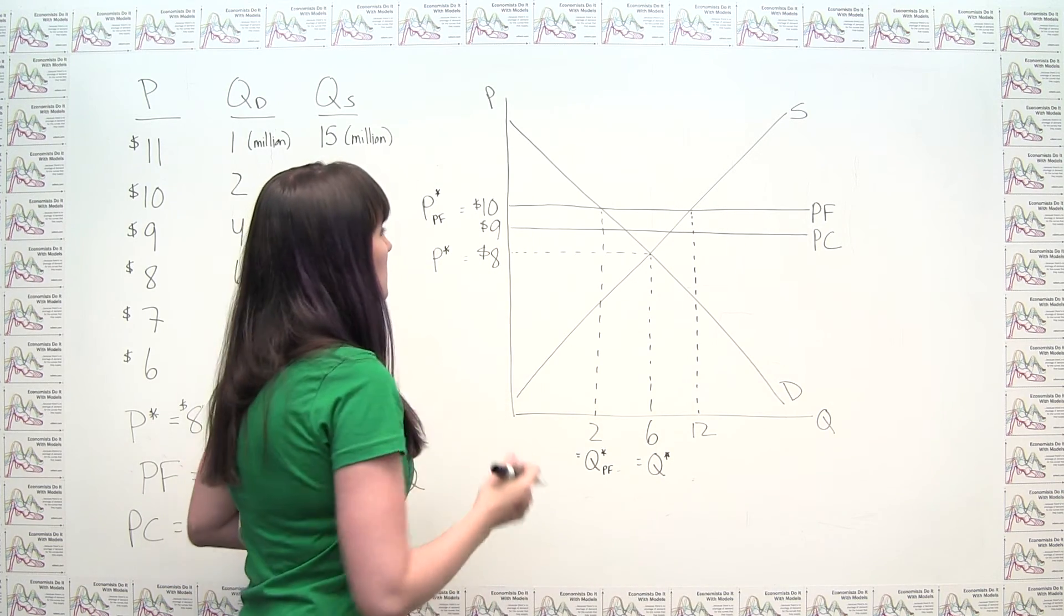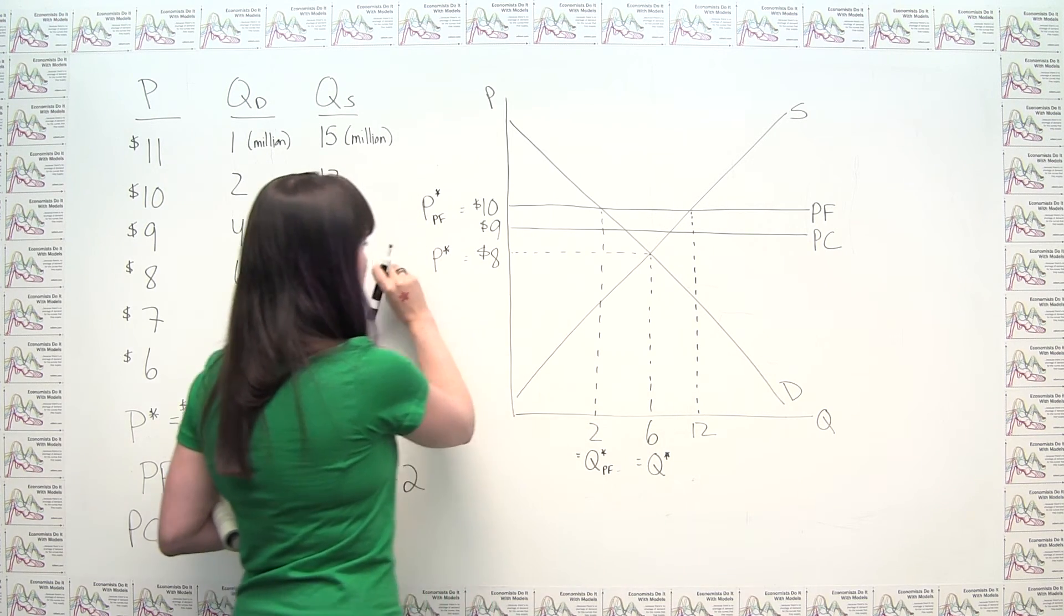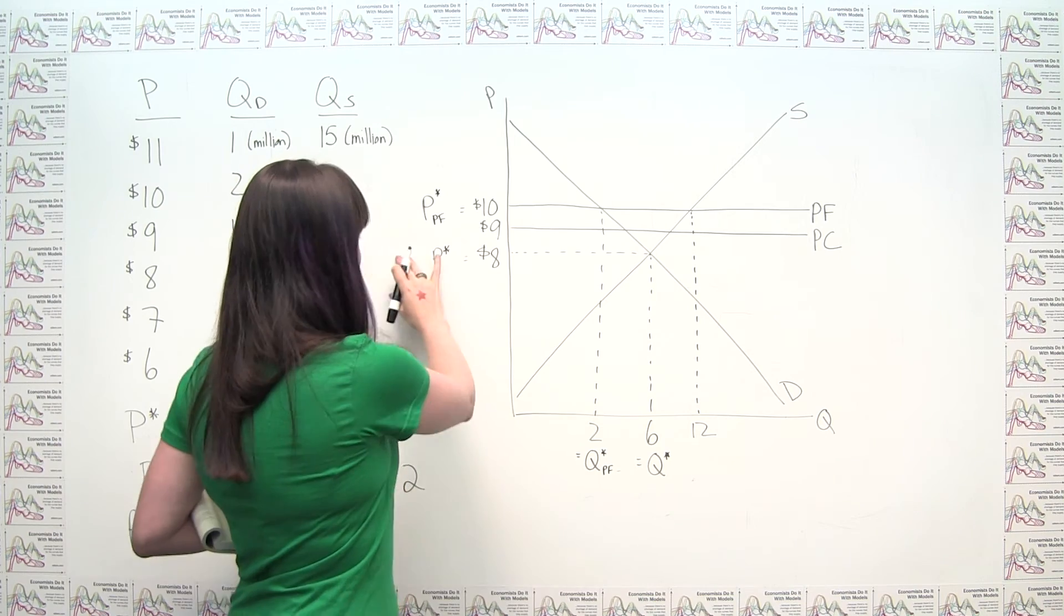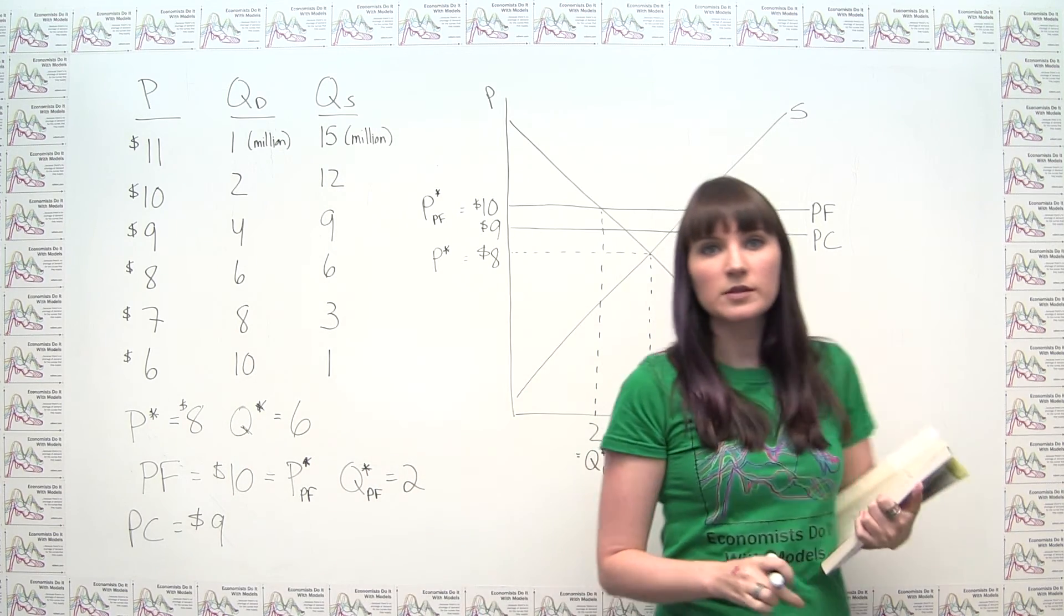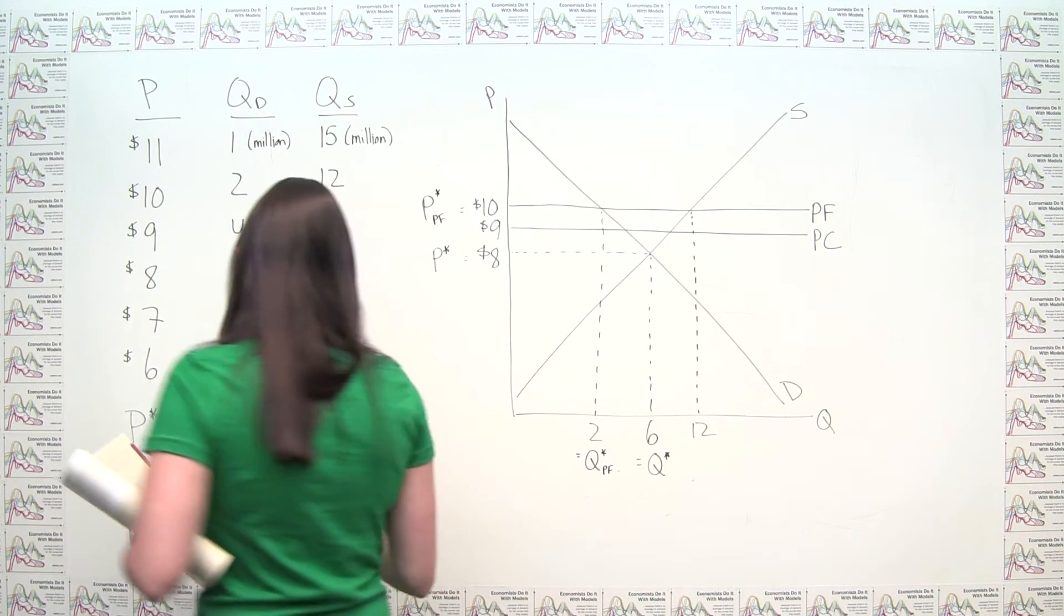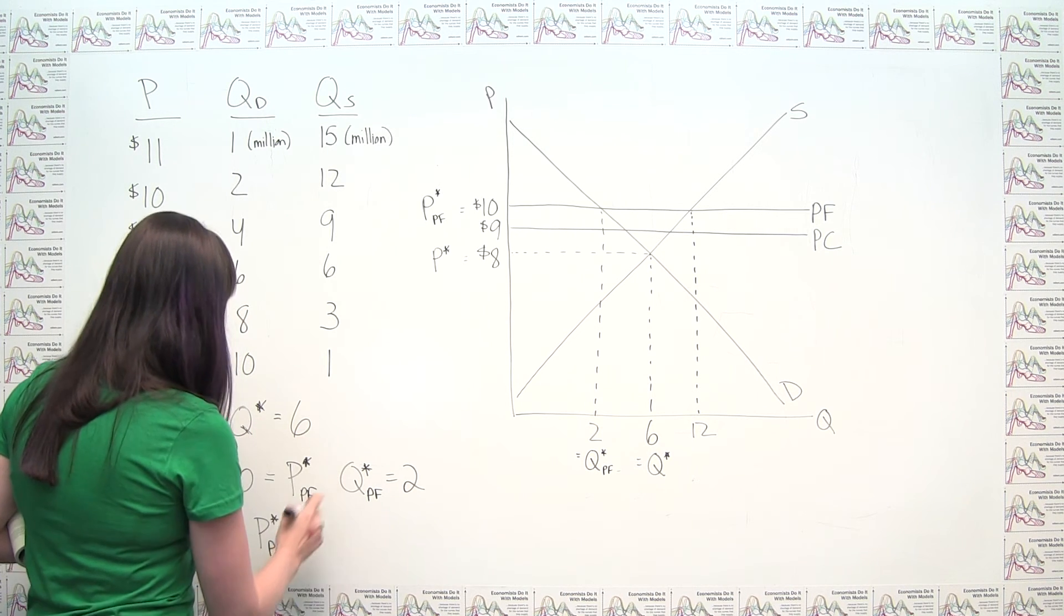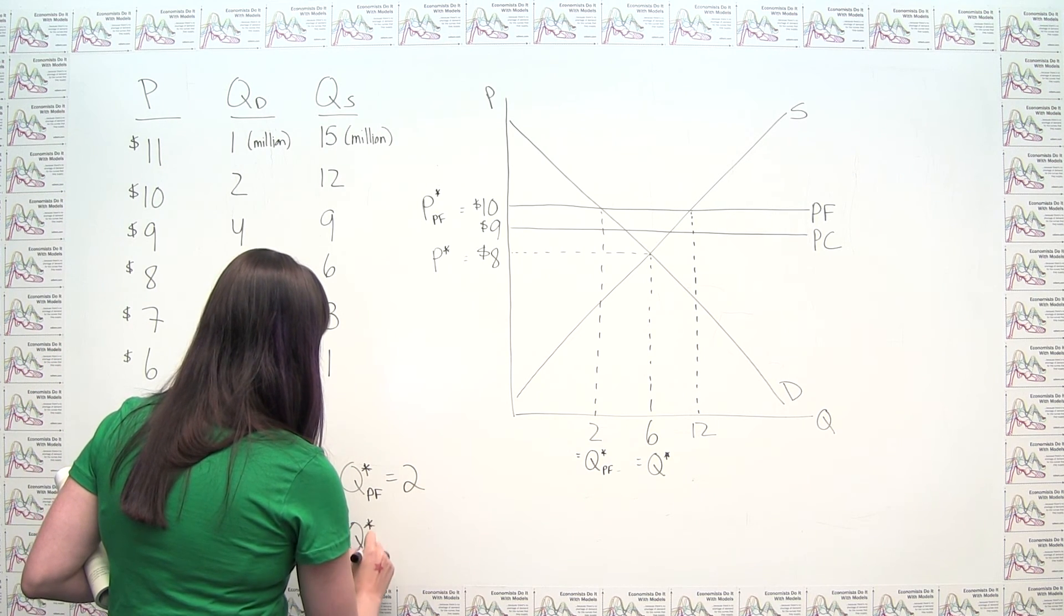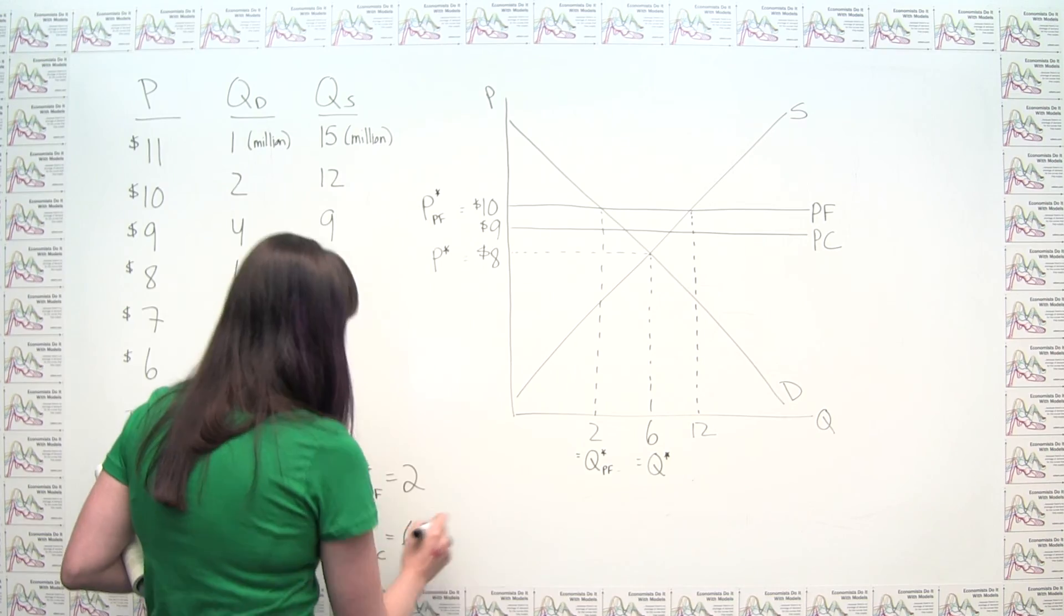So it's important to remember, it's not like the price ceiling drives the price up to $9, whereas it would otherwise be $8. The price ceiling is what we call non-binding. It just says, you can't charge more than $9. Market says, I wasn't going to anyway. And it actually brings us back to this original market equilibrium. So we can say in this situation here that our equilibrium price with the price ceiling is what it was before, which is $8. And our equilibrium quantity with the price ceiling, again because the price ceiling is non-binding, is going to be $6.